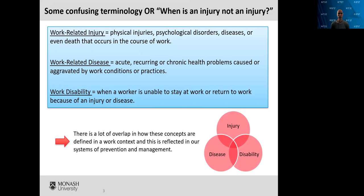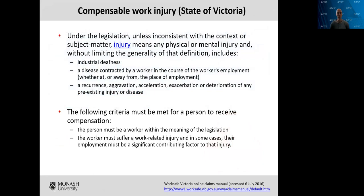Here's an example of what I mean. This is directly from the legislation of the workers compensation scheme here in the state of Victoria — it's the definition of injury. Under the legislation, unless it's inconsistent with the context or subject matter, an injury means any physical or mental injury, and also includes things like industrial deafness, a disease contracted by a worker in the course of that worker's employment, and a recurrence, aggravation, acceleration, exacerbation or deterioration of any pre-existing injury or disease. So you can see it's a very broad concept. This term injury, as defined here in Victoria, encompasses not just trauma, but also diseases, deafness, mental health conditions, and a range of other things.